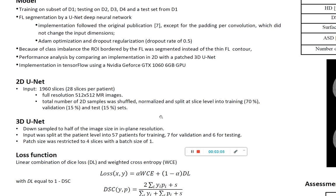As 28 slices belonged to the same patient, we also implemented a patched 3D U-Net architecture. For this purpose, we downsampled the images to half the resolution. For the 3D U-Net, the input was split at patient level into 57 patients for training, 7 for evaluation, and 6 for testing. The patch size was restricted to 4 slices. Both the 2D U-Net and patched 3D U-Net used a linear combination of Dice loss and weighted cross-entropy loss function, as detailed on the poster.